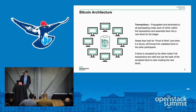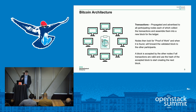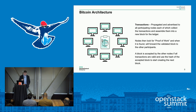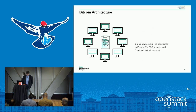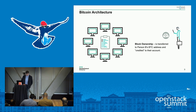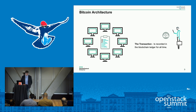Once a node has solved that problem, it advertises the solution to the rest of the cluster. The first one that wins sends it out. There's a checksum attached, and the other nodes validate that checksum against the rest of the packet. Once validated, you also get a hash — a hash of the contents of that block — which is then used to seed the next block. The transaction is then recorded permanently in the ledger, so it's immutable at that point.